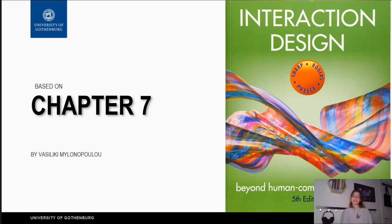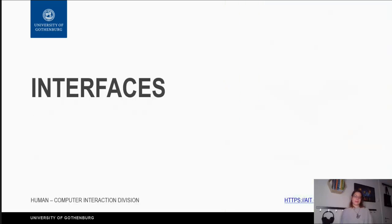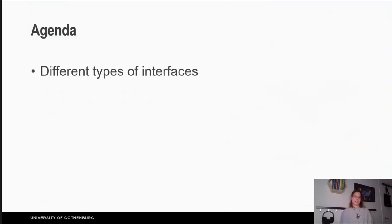Hello and welcome to the video related to chapter 7 of the book 'Interaction Design: Beyond Human-Computer Interaction,' the fifth edition, with the name 'Interfaces.' In this video we will talk about different types of interfaces. If you take the course at the University of Gothenburg in the Applied IT department on Human-Computer Interaction, we are not expecting you to memorize every example in this chapter, but we expect you to be able to recognize the different types of interfaces.